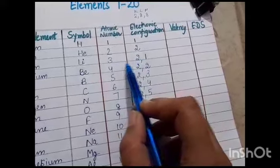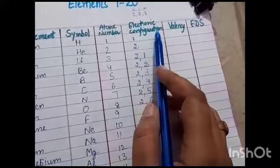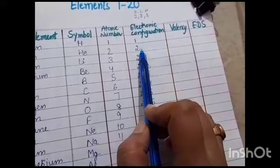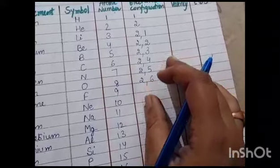2 plus 1 is 3. 2 plus 2 is 4. So the sum of electronic configuration is always equal to the atomic number. Now you can write the electronic configuration of the left elements similarly.